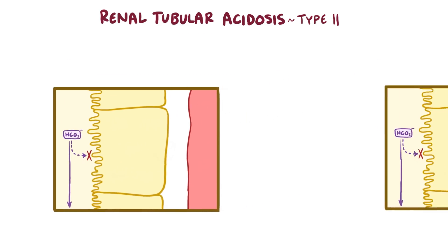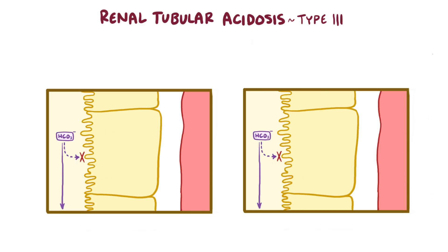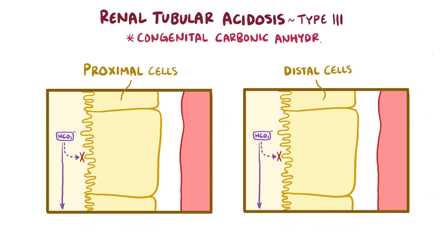In renal tubular acidosis type 3, there's a defect in both the distal and proximal tubule, which is a fairly uncommon situation. The causes of this aren't very well known, but some cases have been associated with congenital carbonic anhydrase deficiency, and this is because carbonic anhydrases are present in both the distal and proximal tubule.